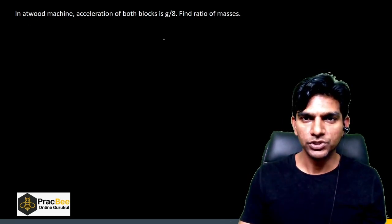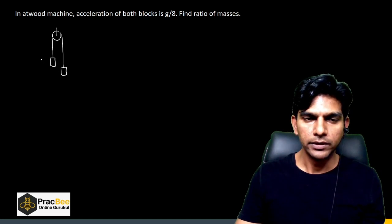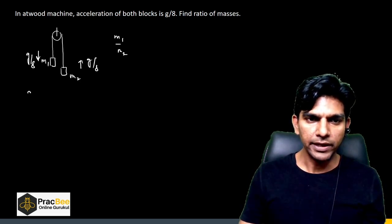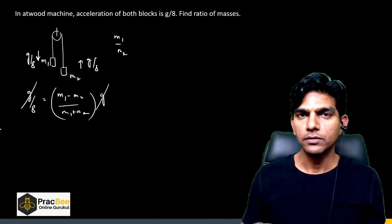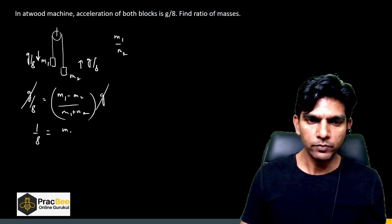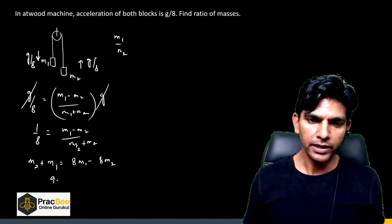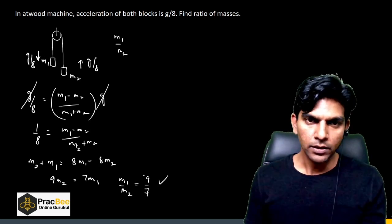The next question is from Newton's Laws — the Atwood machine. Two blocks m₁ and m₂ are connected by a string over a pulley with acceleration g/8. Using the formula a = (m₁ − m₂)g / (m₁ + m₂), substituting 1/8 gives m₁ − m₂ = (1/8)(m₁ + m₂). Rearranging: 9m₂ = 7m₁, so m₁/m₂ = 9/7. That is the answer.